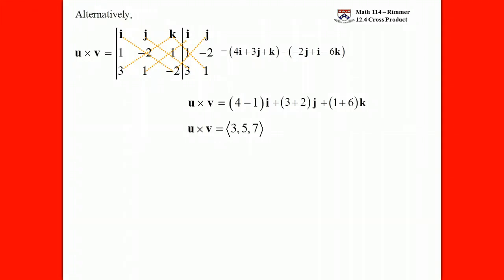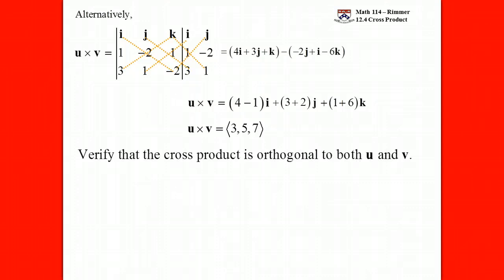So however you choose to do it, whichever you feel more comfortable with. Just remember that in the end, what are you getting? This object that we're getting — this vector — is a very special vector. It's a vector that is orthogonal to both the original two vectors. How do you check whether a vector is orthogonal to another vector? You check the dot product and make sure it's equal to zero.